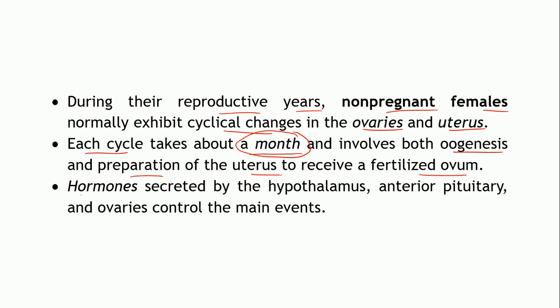Apart from that, there are several hormones which also play a very important role in this female reproductive cycle. Most of the events are controlled by these hormones, which are secreted by the hypothalamus, anterior pituitary, and the ovaries themselves. The levels of hormones change, and accordingly there are certain events occurring in the ovaries and certain events occurring in the uterus. The reason why these changes are taking place is the hormonal levels — that is very important.